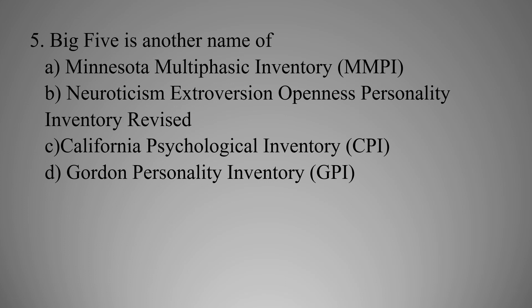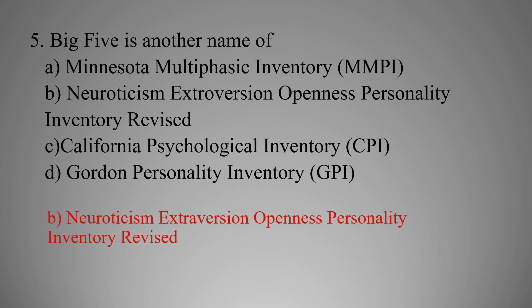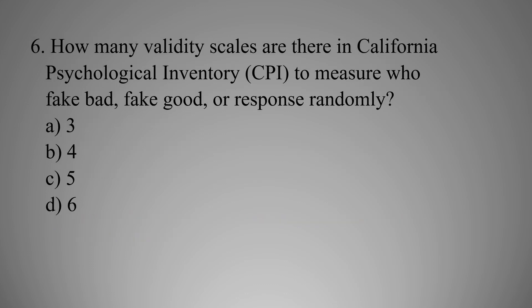MCQ number five: Options include California Psychological Inventory (CPI) and Gordon Personality Inventory (GPI), with the right option being B — Neuroticism Extroversion Openness Personality Inventory Revised.